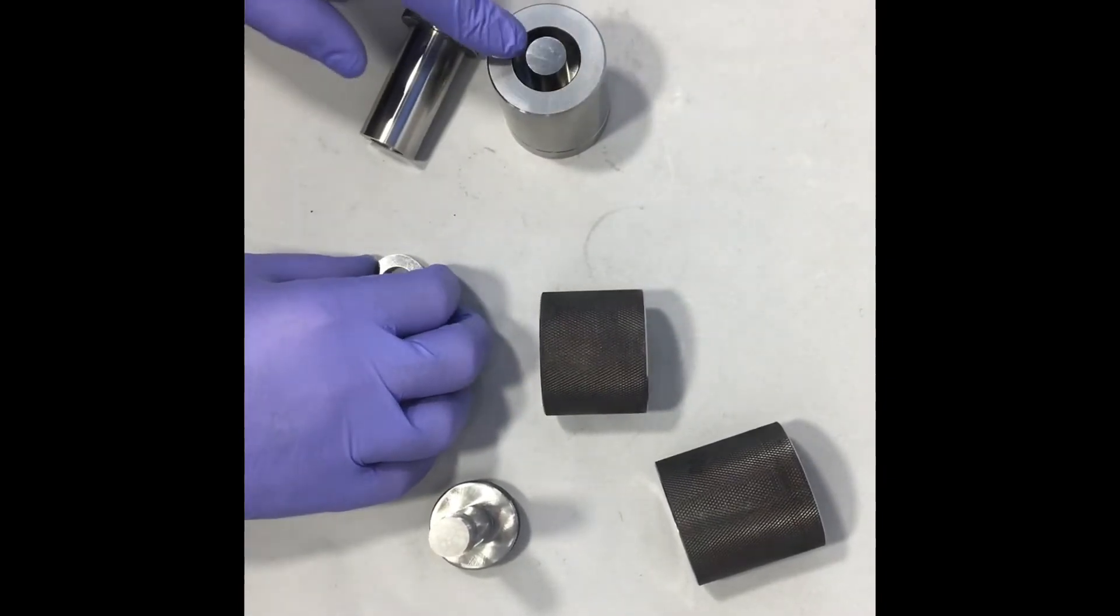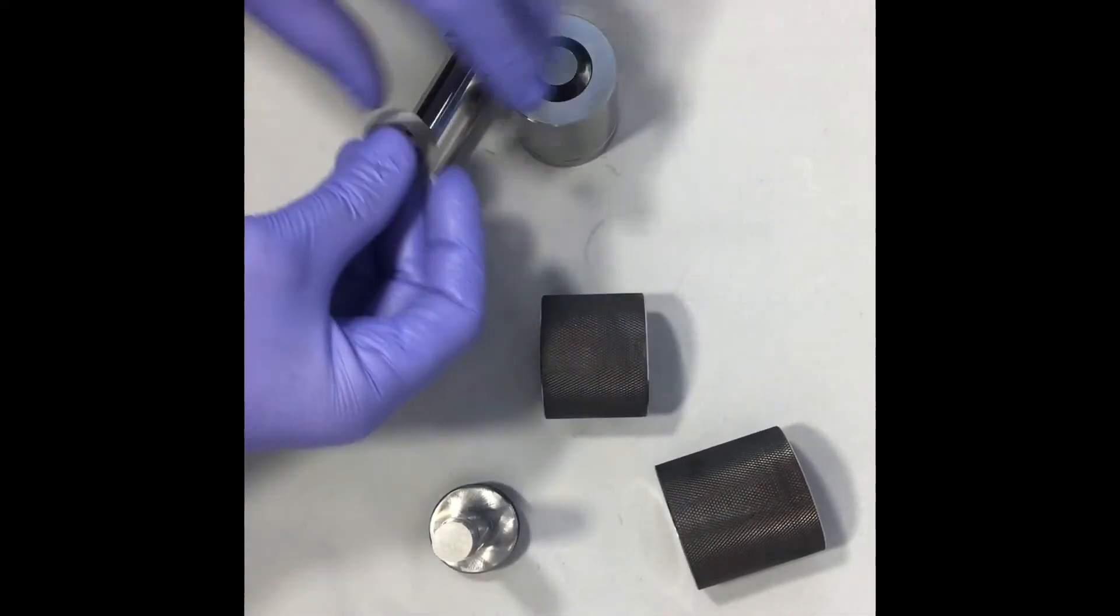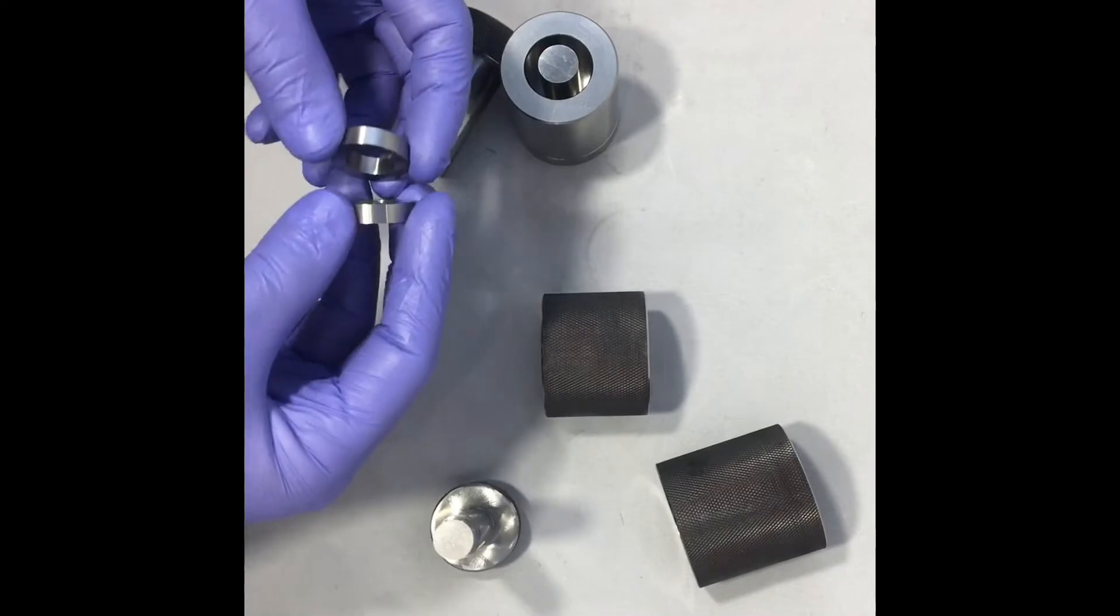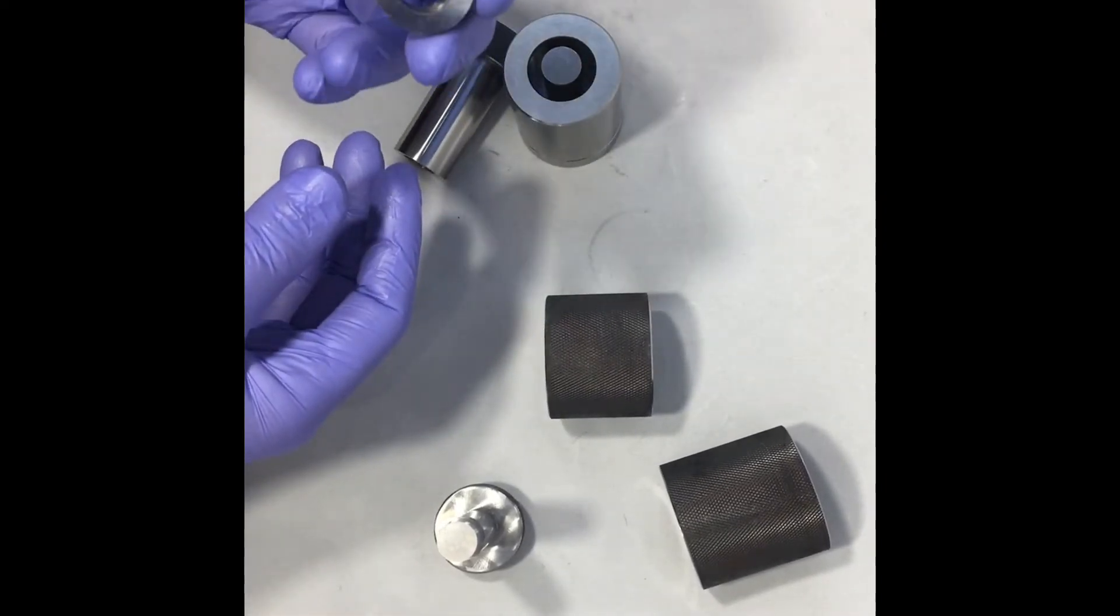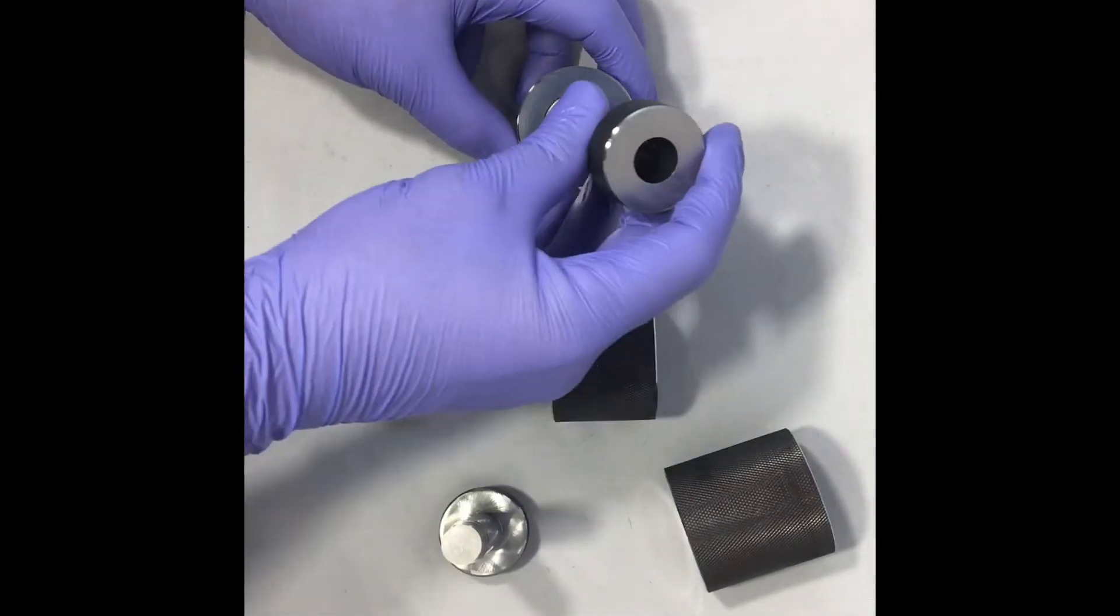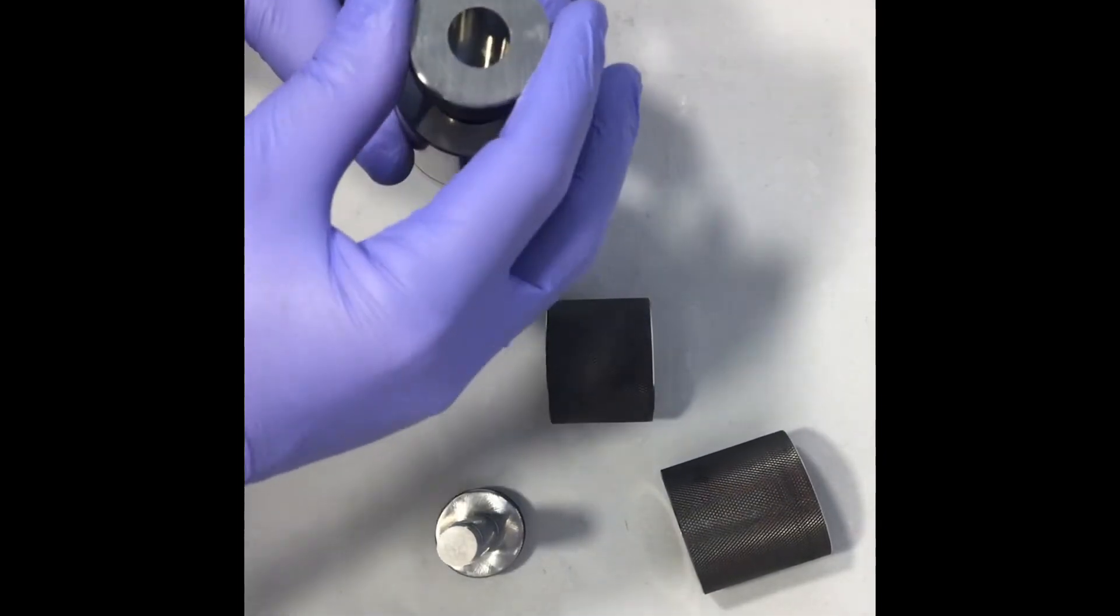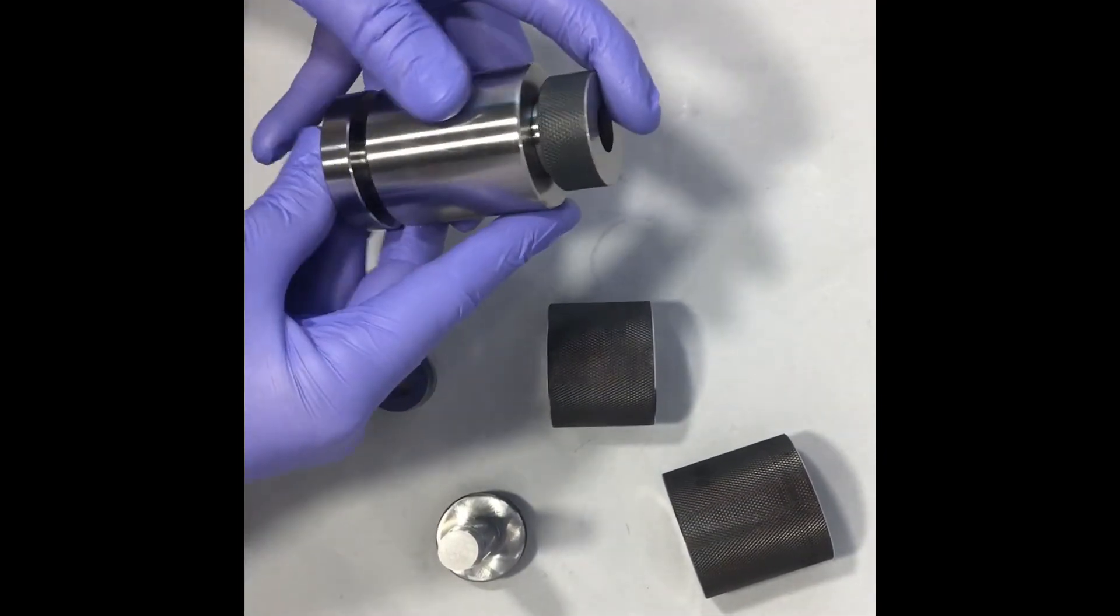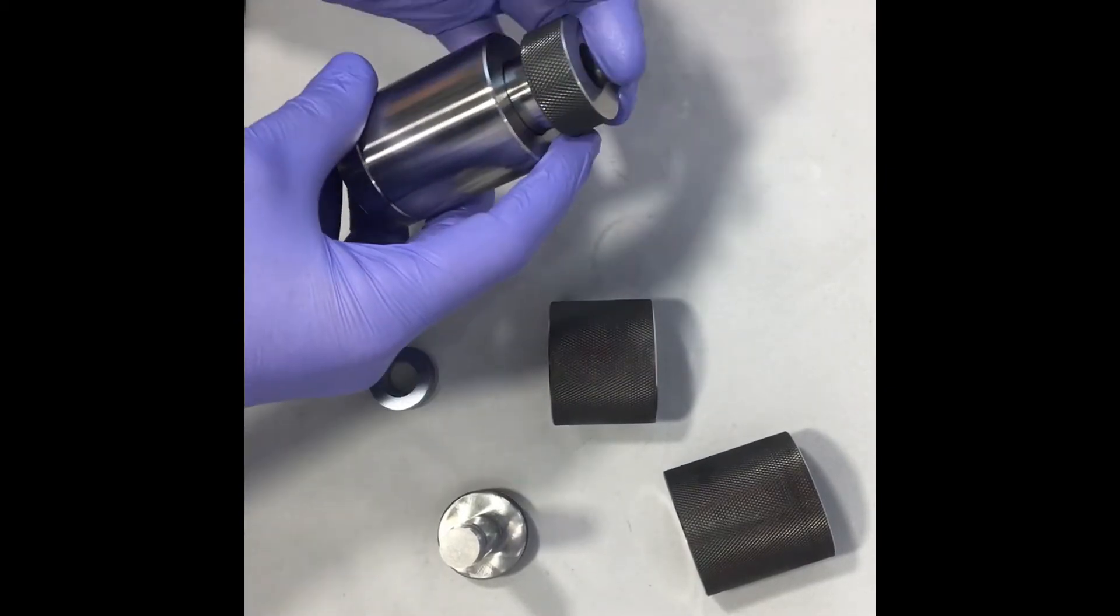You can either load your powder directly into here or if you're using the spacers this is when you put in your first spacer. What I'll do is I'll load this without adding the spacers here. So you put your powder in and then you put your plunger on top that fits over the pin like that and slides down. You can see how that all goes together there, slides through in and out just like that.